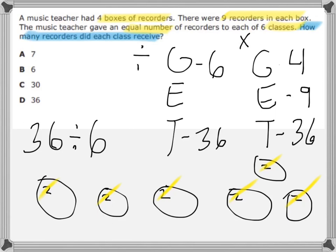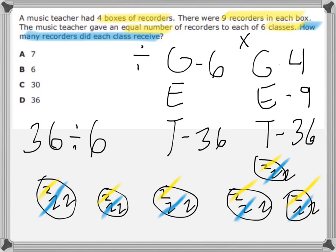Not there yet. Let's put another two into each group. So, I had twelve — now I have fourteen, sixteen, eighteen, twenty, twenty-two, twenty-four. Still trying to get to thirty-six. Let's go with another two. I had twenty-four — now I have twenty-six, twenty-eight, thirty, thirty-two, thirty-four, and thirty-six.